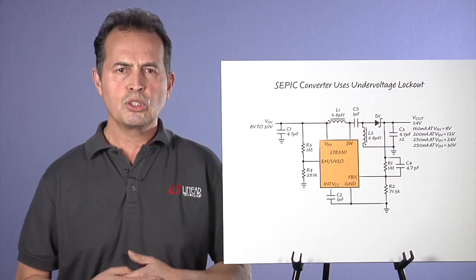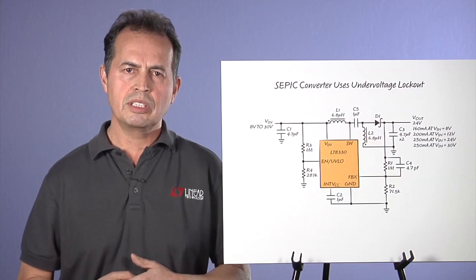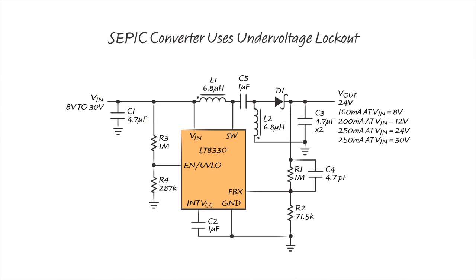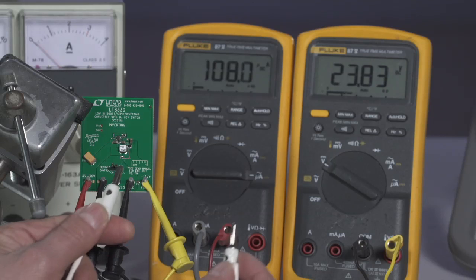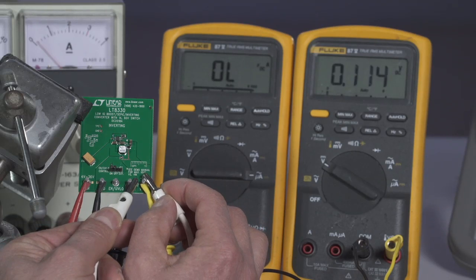Often, the input source needs to be higher or lower than the output. For this situation, a SEPIC converter comes in handy. This topology has the added benefit of surviving output short circuits.